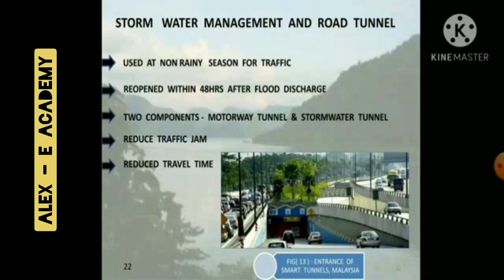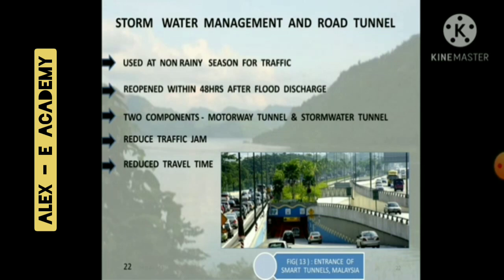The future scope of the project is stormwater management and road tunnel. During non-rainy seasons, the tunnel can be used for traffic, and reopened within 48 hours after flood discharge. There are two main components: the motorway tunnel for vehicles and the stormwater tunnel for stormwater. The main advantage is it reduces traffic congestion and travel time. Figure 13 shows the entrance of SMART tunnels in Malaysia.